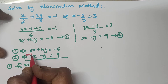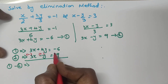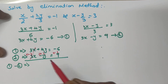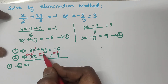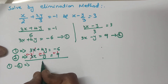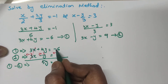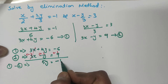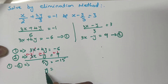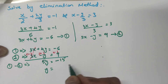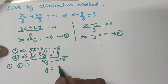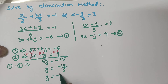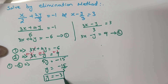Changing the sign of the second equation: positive becomes negative, negative becomes positive. Now 3x minus 3x cancels out. 4y plus 1y gives 5y. On the right side, both terms are negative, so we add them: minus 6 and minus 9 gives minus 15. Therefore 5y equals minus 15, so y equals minus 15 divided by 5, which is minus 3.